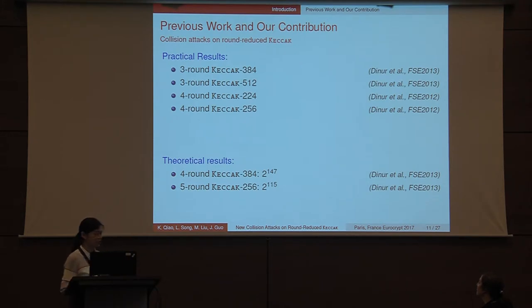We focus on collision attacks in this work. And the best previous collision attacks on Keccak family include the practical results on three-round members and four-round members. Here the suffix number is the digest size. Theoretical results include four-round members and five-round members. All these results are presented by Dinur et al. in about 2012 and 2013.